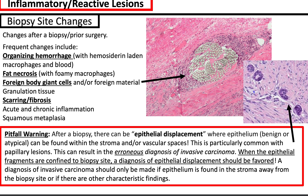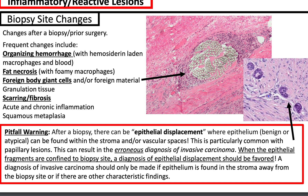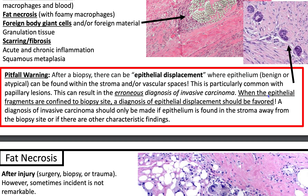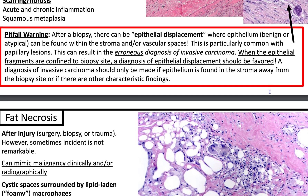When you get a resection specimen of the breast and they had a prior biopsy site, do not mistake epithelial displacement for cancer. When the epithelial fragments are confined to the biopsy site, a diagnosis of epithelial displacement should be favored. A diagnosis of invasive carcinoma should be made only if the epithelium is found in the stroma away from the biopsy site, or if there are other characteristic findings like cellular atypia, very high mitotic activity, and other findings suggestive of invasive ductal, invasive lobular, or other subtypes of carcinoma. We have another video of Kurtz notes on breast carcinomas, so take a look if you have time.